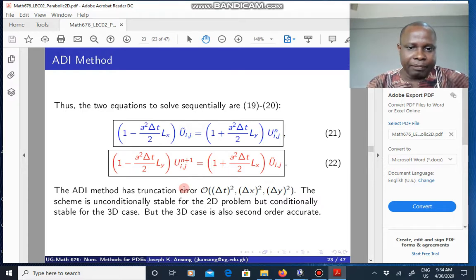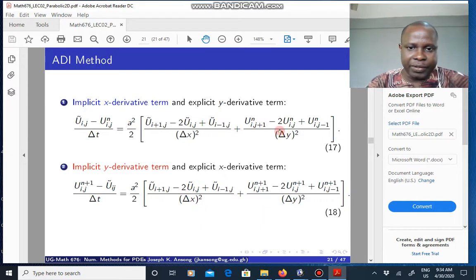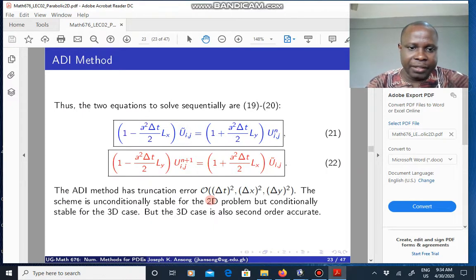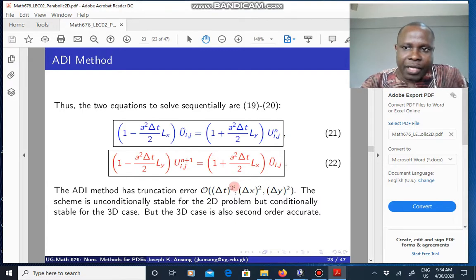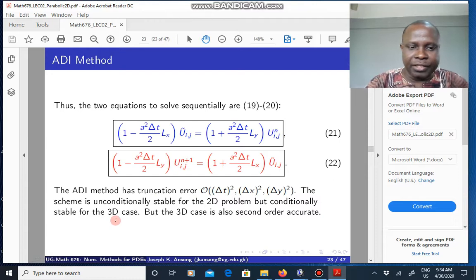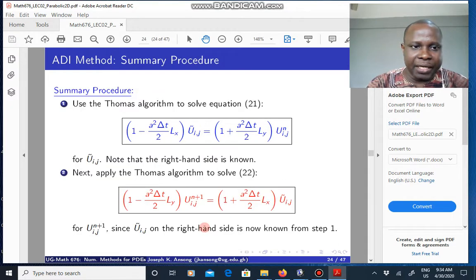But the method, because if you look at it, it's basically like the Crank-Nicolson scheme in each of the steps. Because of that, the truncation error is second order in both space and time. And the scheme is unconditionally stable for this 2D case. If you move to the 3D case, it is conditionally stable. But we are not looking at the 3D case, we are just going to concentrate on the 2D. So that is basically the ADI method.